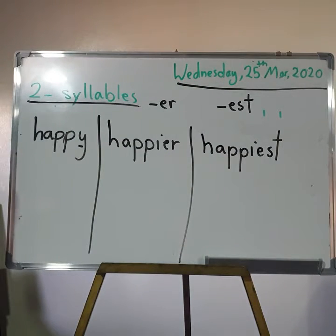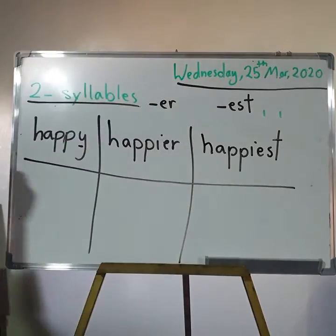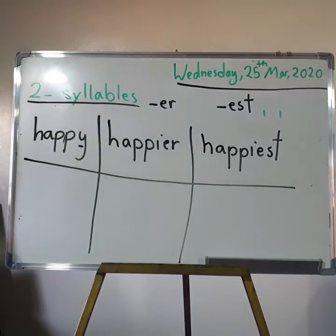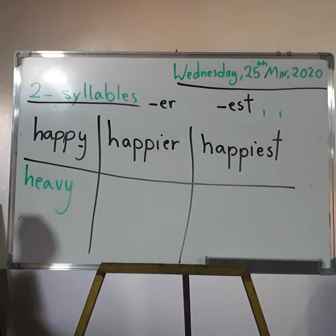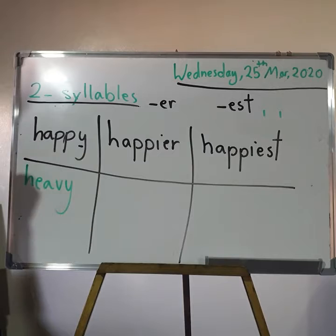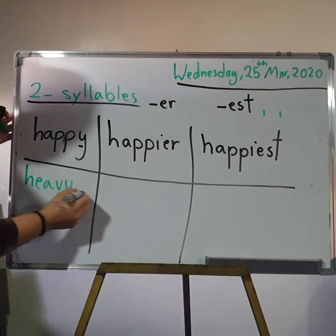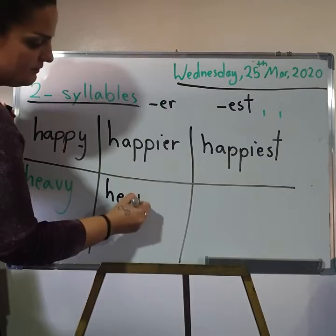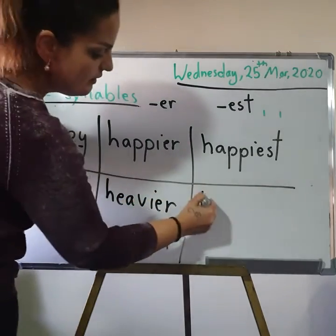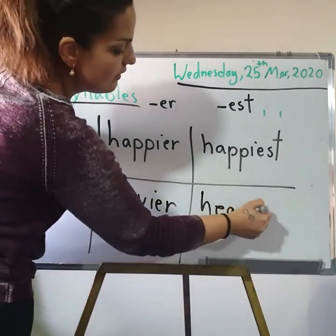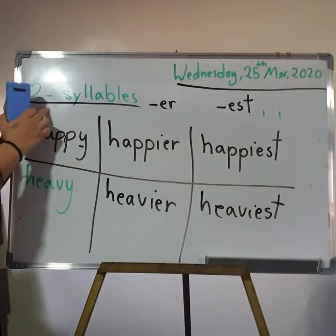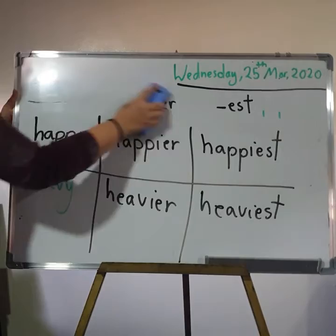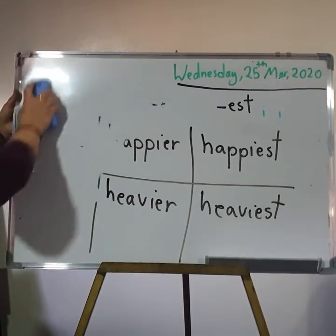I remove the Y and add I with -est. Another example: 'heavy' — when something is too heavy to carry. It also ends in -Y with a consonant before it, so: heavy → heavier than → the heaviest. These adjectives have two syllables or fewer.